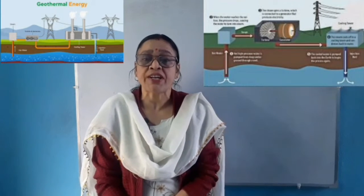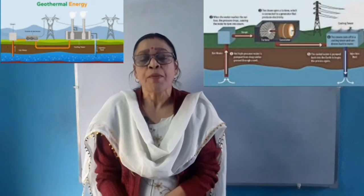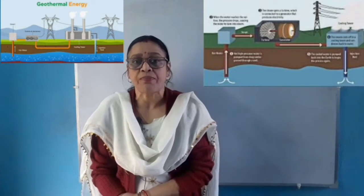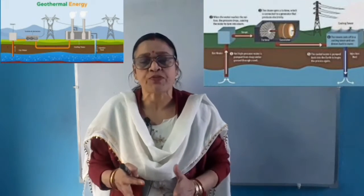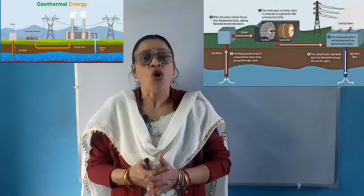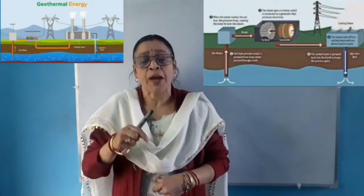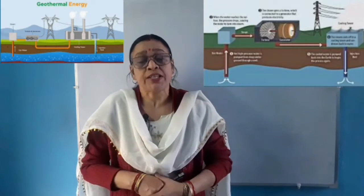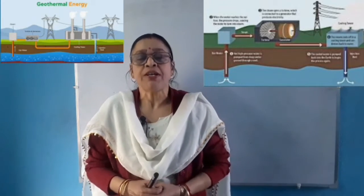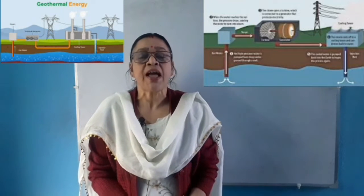Question number three: explain how geothermal energy can be used to generate electricity. The extremely hot rocks present below the surface of the earth heat the underground water and turn it into steam. As more and more steam is formed between the rocks, the steam gets compressed to high pressure. When a hole is drilled into the earth up to these hot rocks and a pipe is inserted, the steam which is formed around the rocks comes out through this pipe at high pressure.